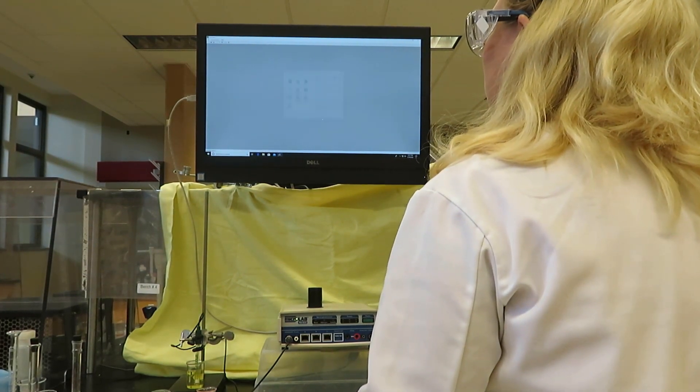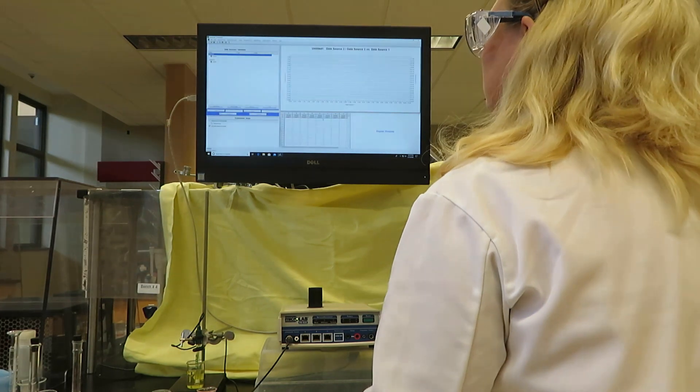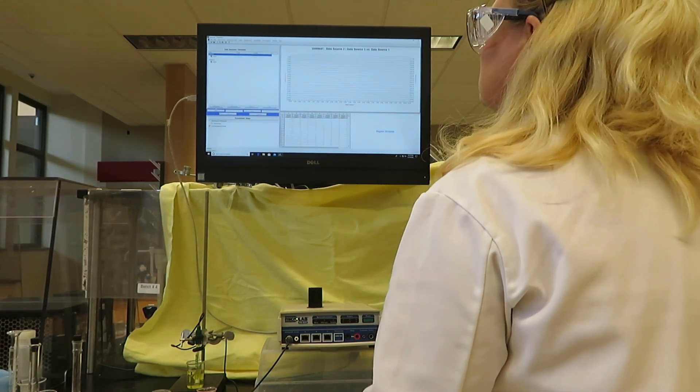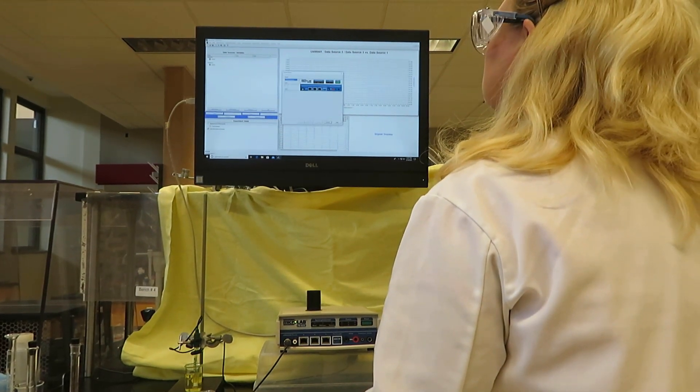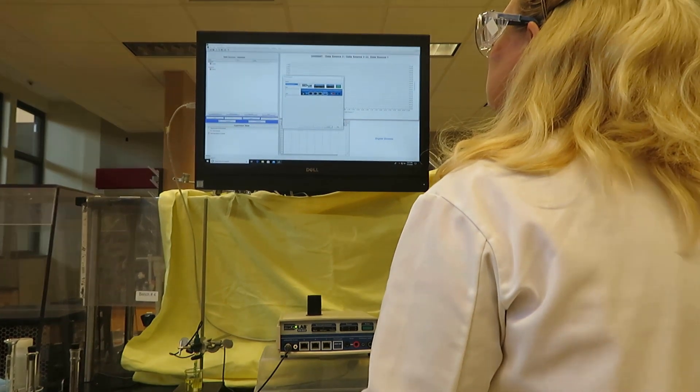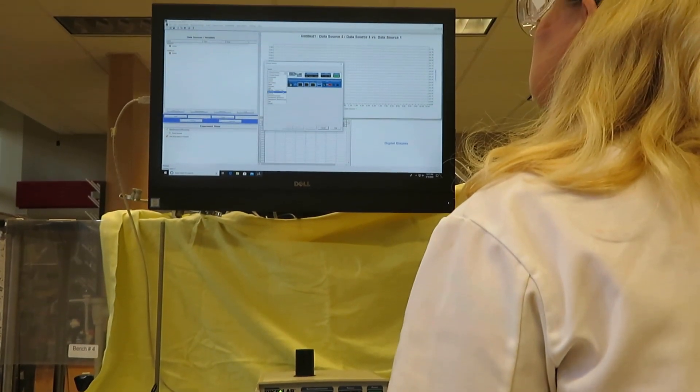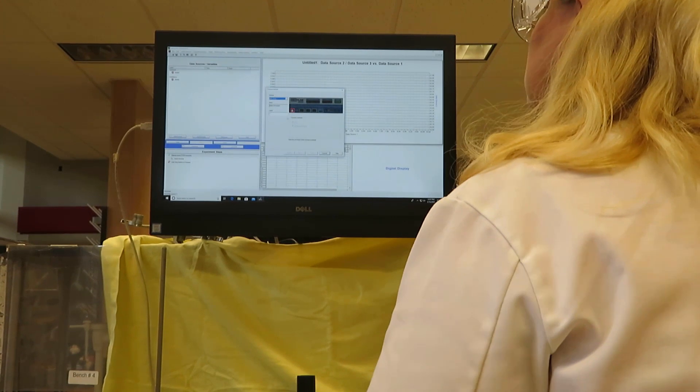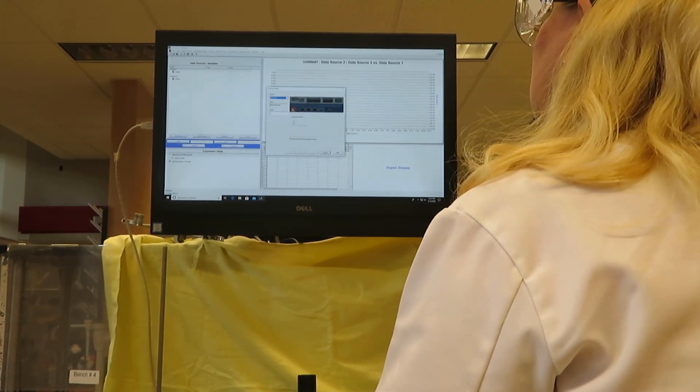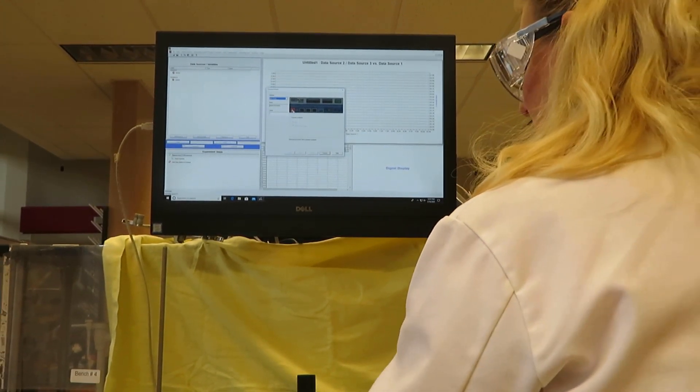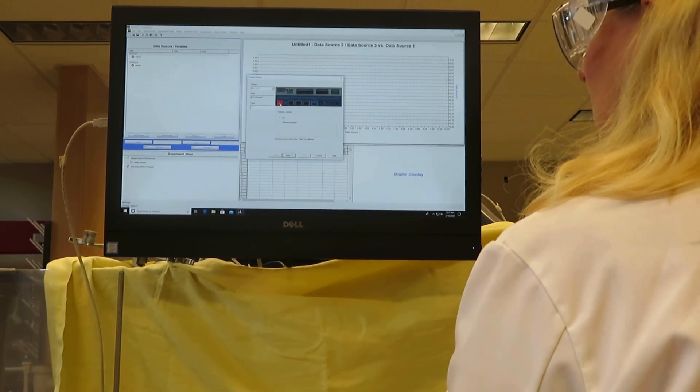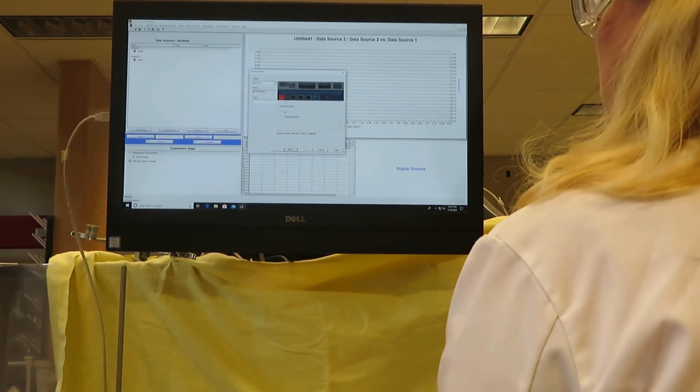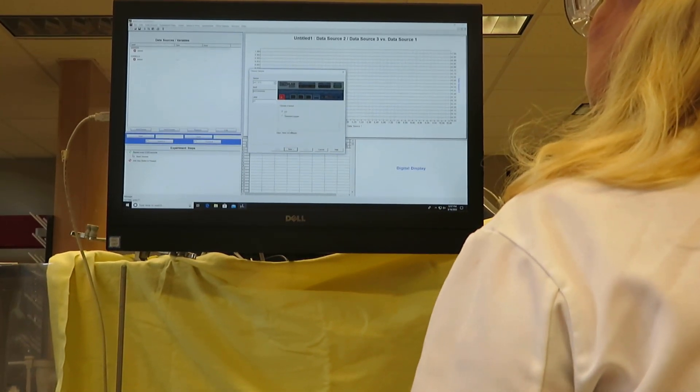We'll say OK to our Microlab experiment, and then add a sensor. The sensor we'll be adding is the pH or dissolved oxygen probe, and we will be using this connector on the Microlab to measure pH.